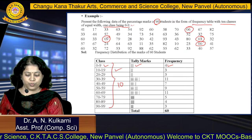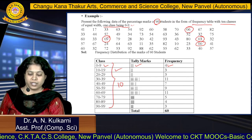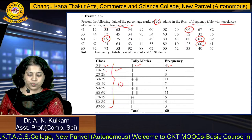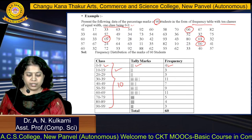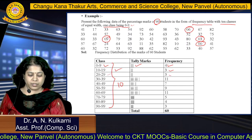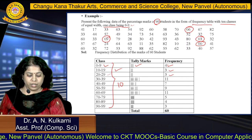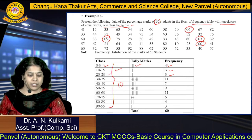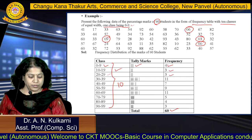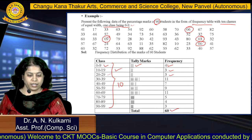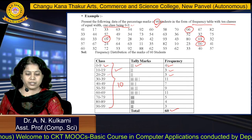In the same way, calculate frequencies for all remaining classes: for 10 to 19 the frequency is 3, for 20 to 29 it is 3, and so on. The total frequency sums to 60, which is correct since the data represents percentage marks of 60 students.